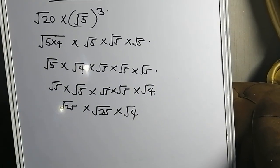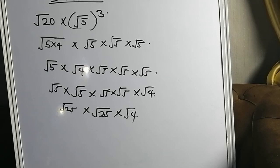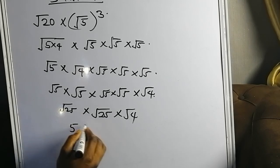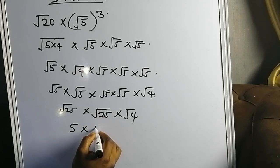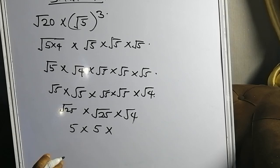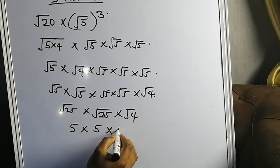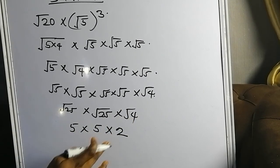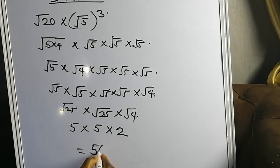Very simple. What's the square root of 25? It's 5. What's the square root of 25? It's 5. What's the square root of 4? That's 2. It means 5 times 5 is 25, times 2 is 50. It's as simple as that.